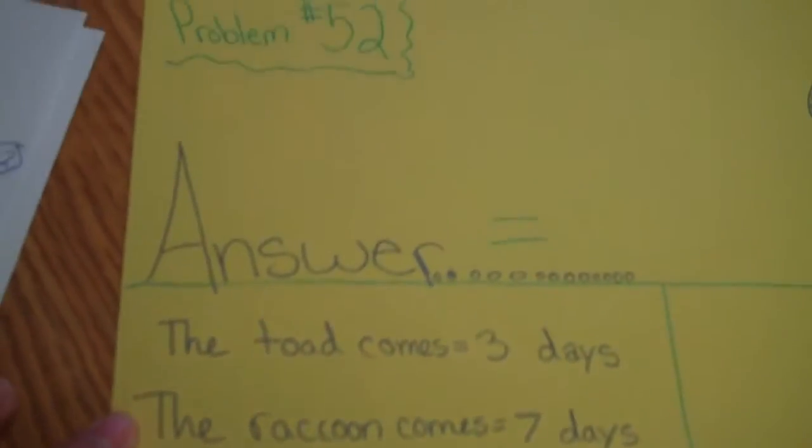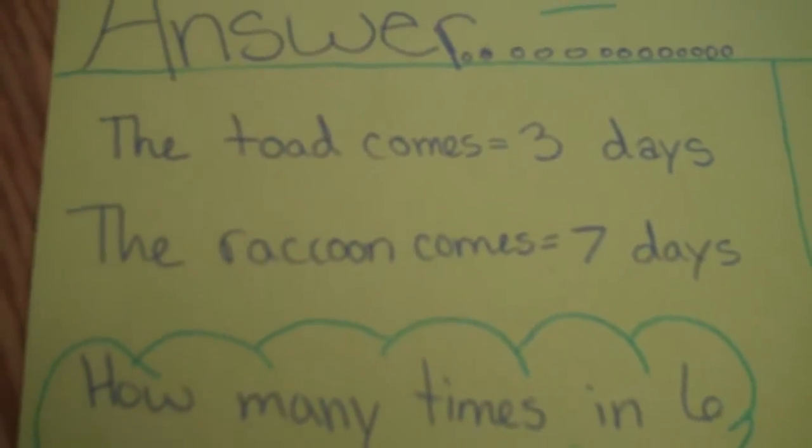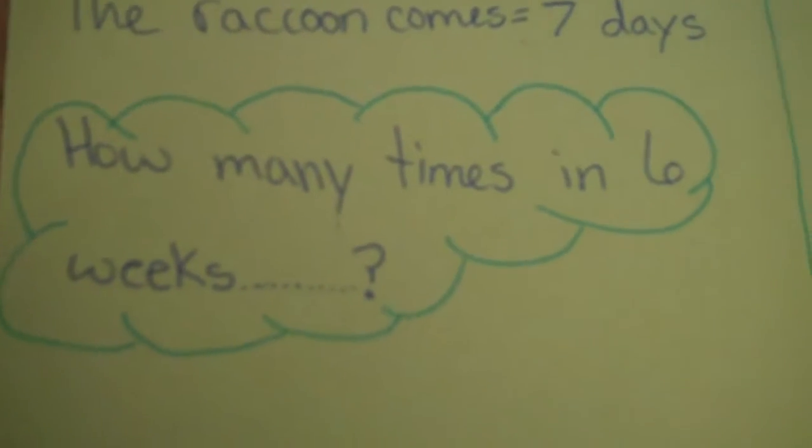Well, this is number 52 by Skyler. Okay, so the toad came every three days, and the raccoon came every 70 days. How many times in six weeks did that happen?